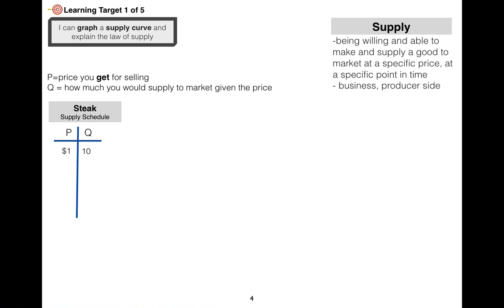So with steak: if producers think they can get $1 per steak, then the quantity supplied might be 10 — they'd make 10 given that incentive. But if they think they can get $5 per steak, the quantity supplied would increase to 20, because that's a greater incentive. If the price were $10, quantity supplied is 30. At $15, quantity supplied is 40. At $20, quantity supplied is 50.